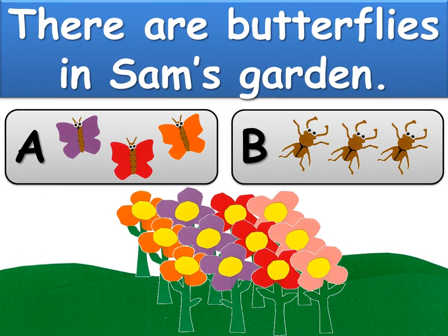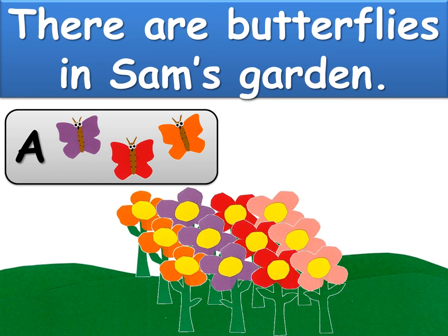There are bees in Sam's garden. Is the answer A or B? The answer is A.